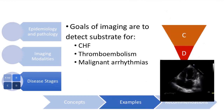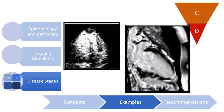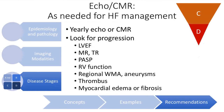Stages C and D represent symptomatic heart failure and refractory heart failure, respectively. The goals of imaging are to detect substrate for heart failure, thromboembolism, and malignant arrhythmias — looking for aneurysms that may trigger arrhythmias, presence of thrombi, and also evaluating the myocardium itself with cardiac MRI for fibrosis and scarring. The recommendation is yearly echo or CMR, possibly more frequently depending on the case, monitoring for progression of all the features discussed.